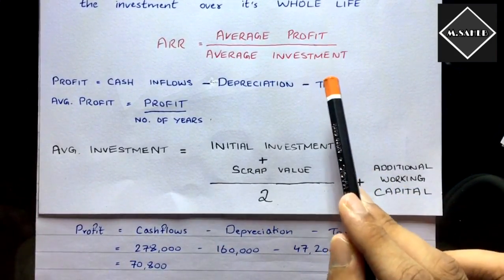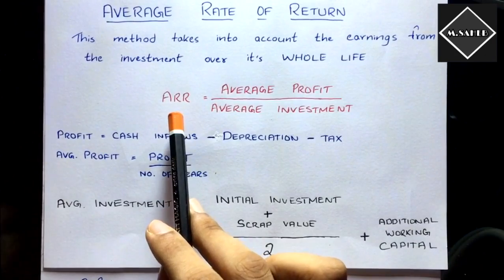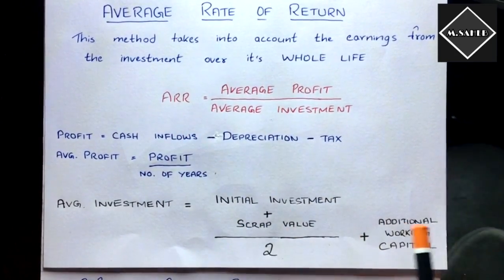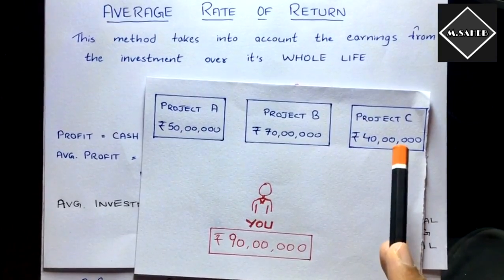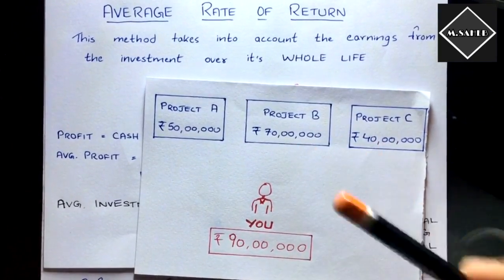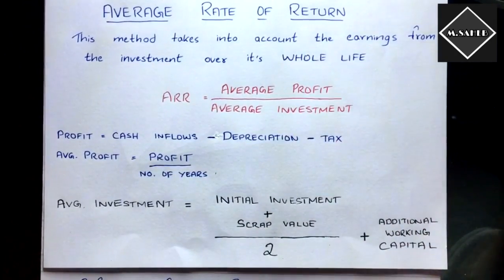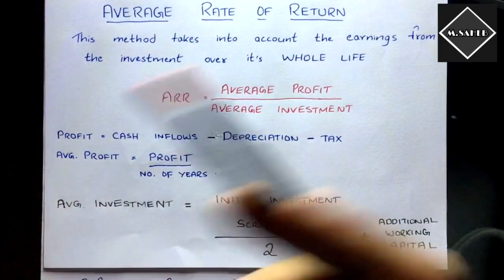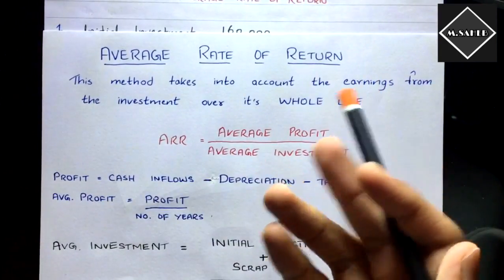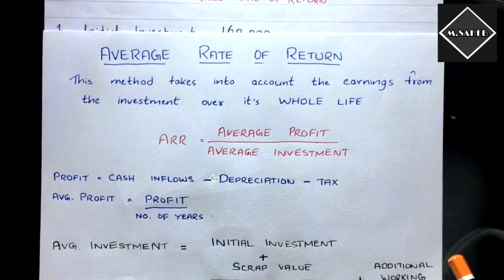Once you divide average profit by average investment you get the ARR as a percentage. You then compare the ARRs of different projects and select the one with the highest Average Rate of Return. Because this method focuses on accounting profits, it is also known as the Accounting Rate of Return.